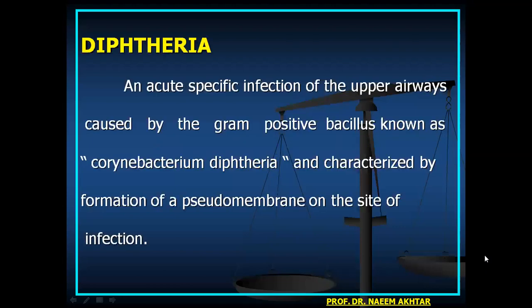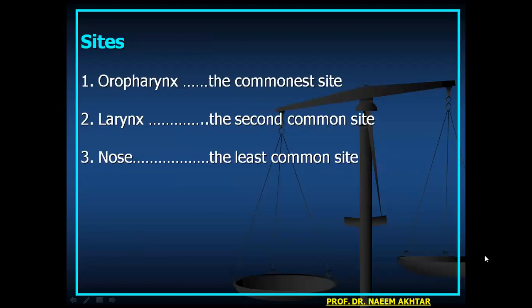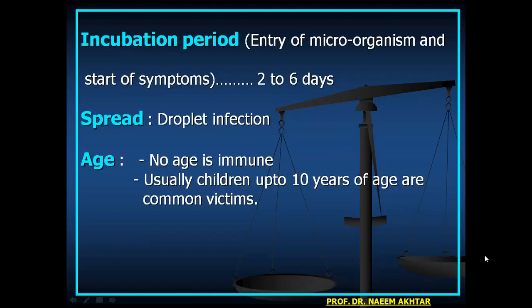Diphtheria is an acute specific infection of the upper airways caused by the gram-positive bacillus Corynebacterium diphtheriae, characterized by formation of a pseudomembrane at the site of infection. Sites: oropharynx is the commonest, larynx is second, and nose is the least common. Incubation period is 2 to 6 days. Spread is by droplet infection.